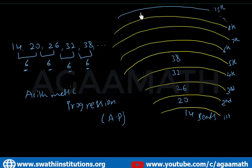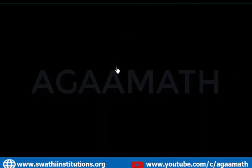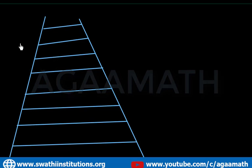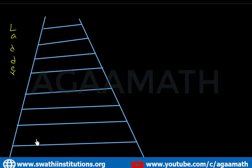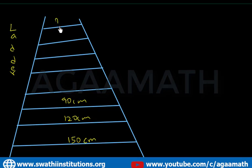Here is another example — a ladder. We use ladders to reach things that are higher up. The length of the first bar is 150 centimeters, the second is 120 centimeters, and the third is 90 centimeters. What would be the length of the bar at the top?